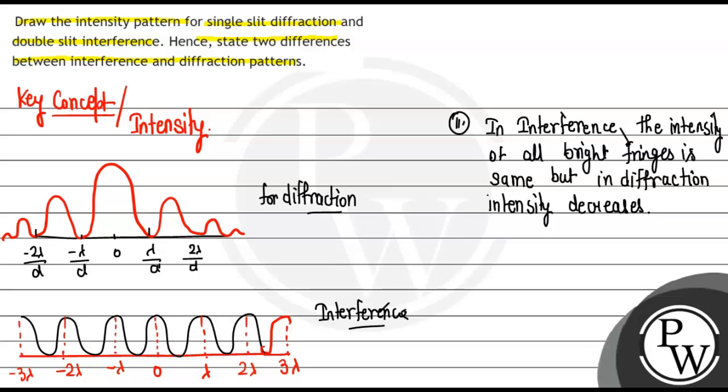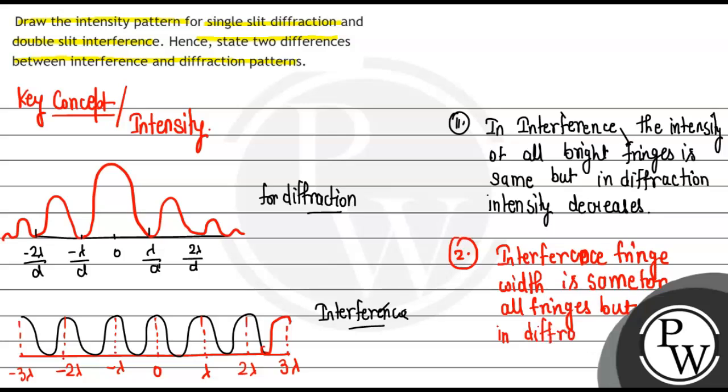The second difference is that in interference, the fringe width is the same for all fringes. But in diffraction, the fringe width is not the same.